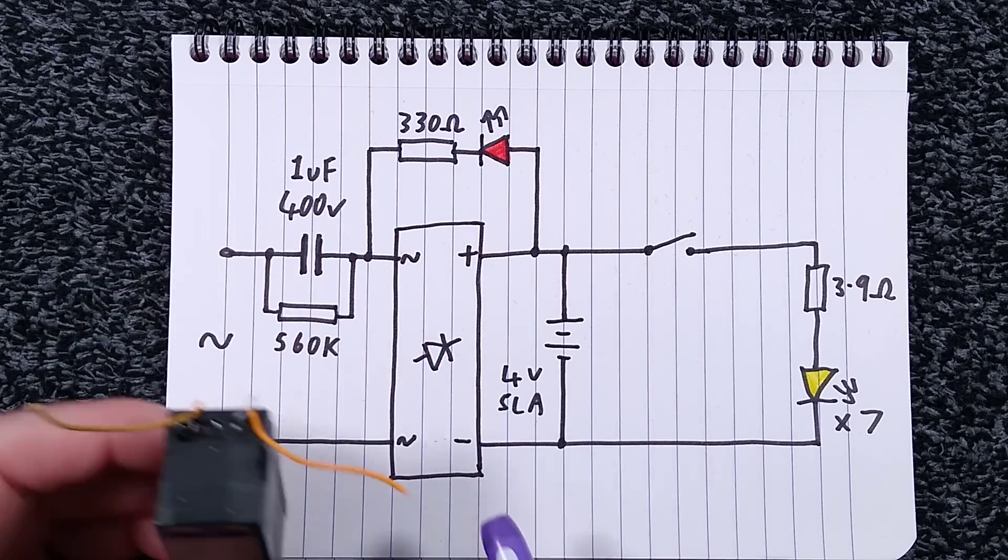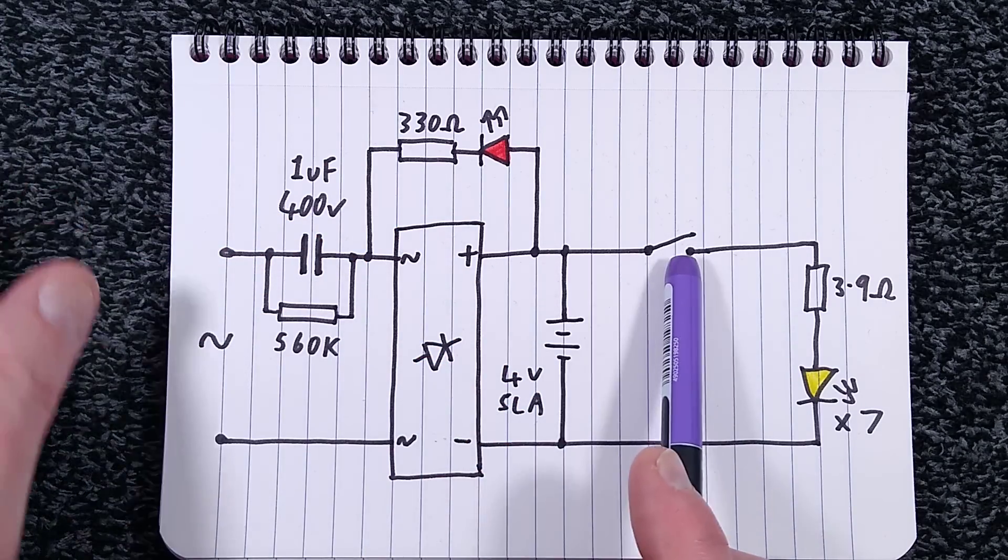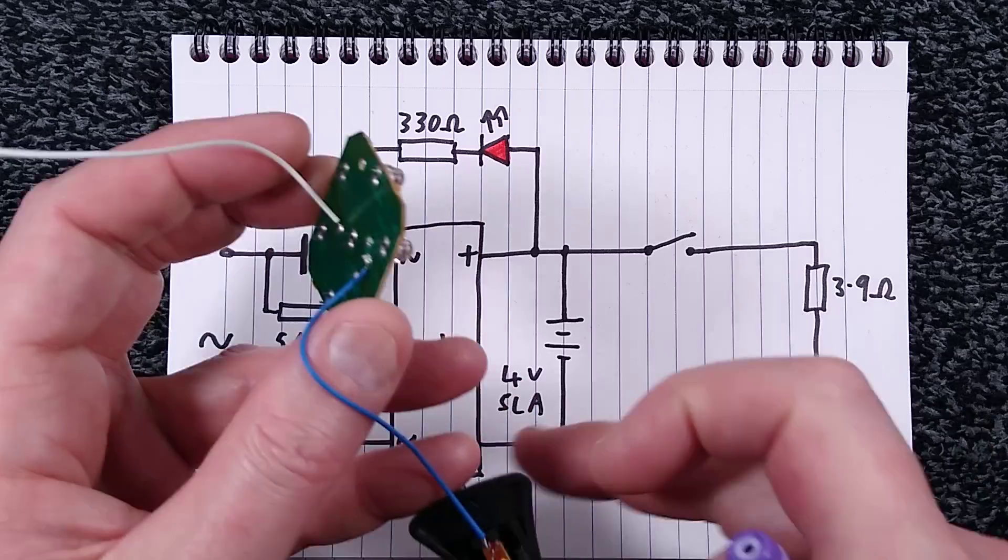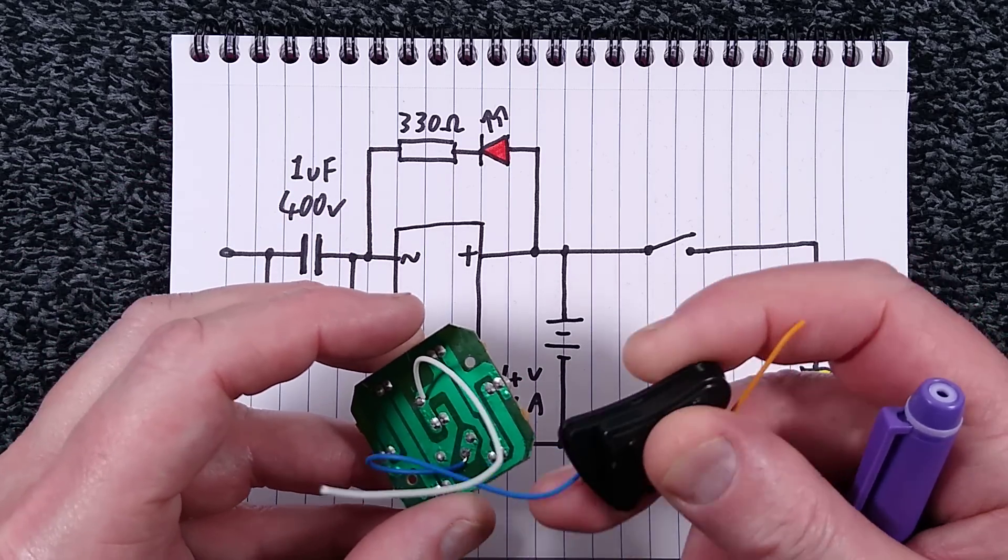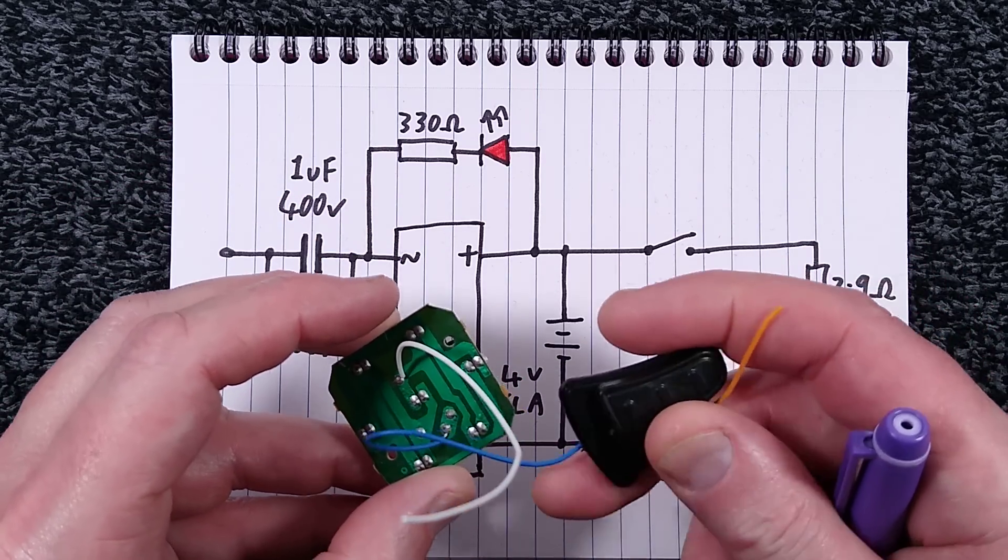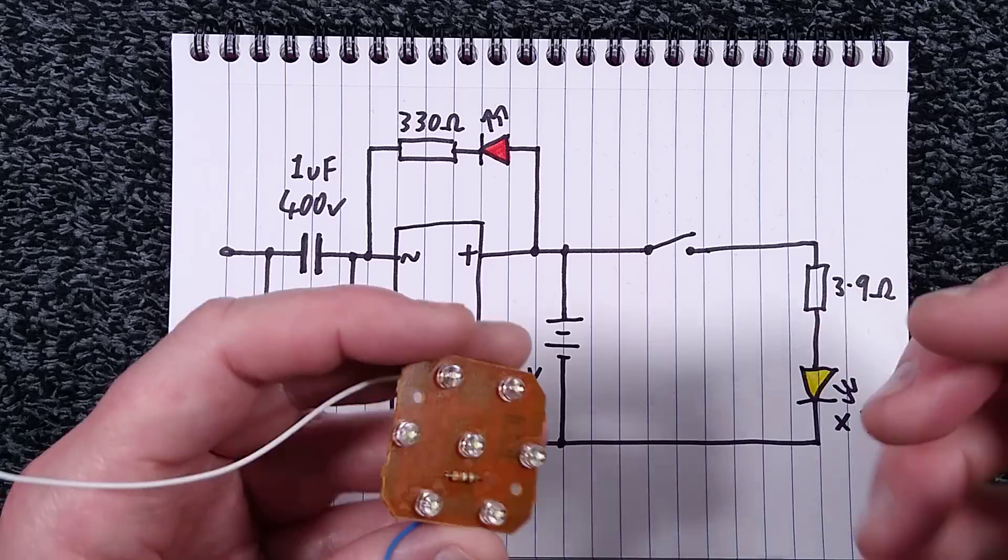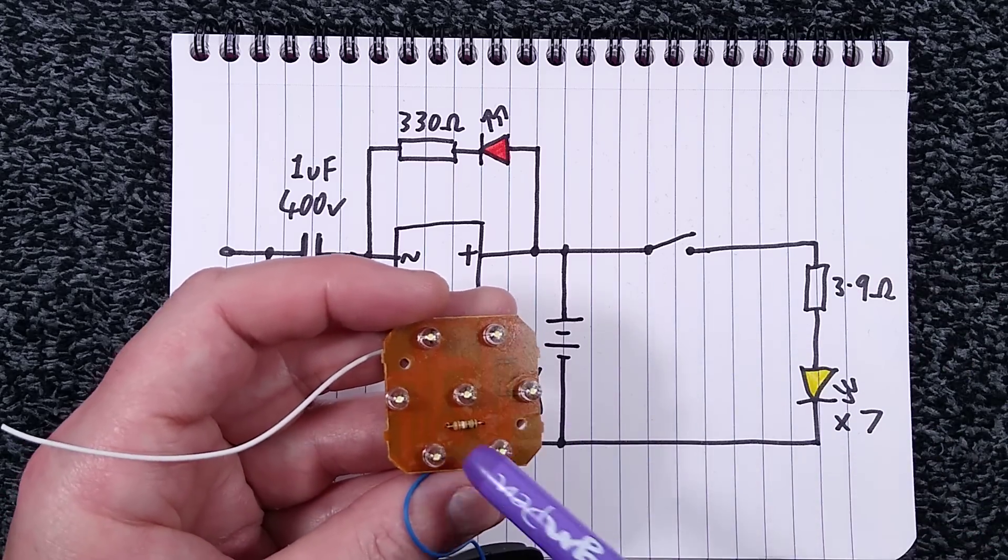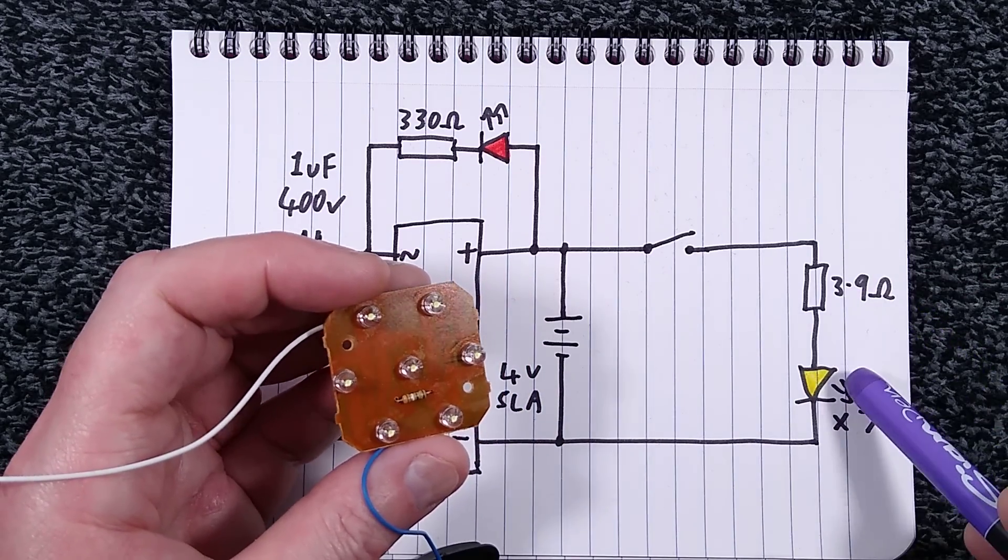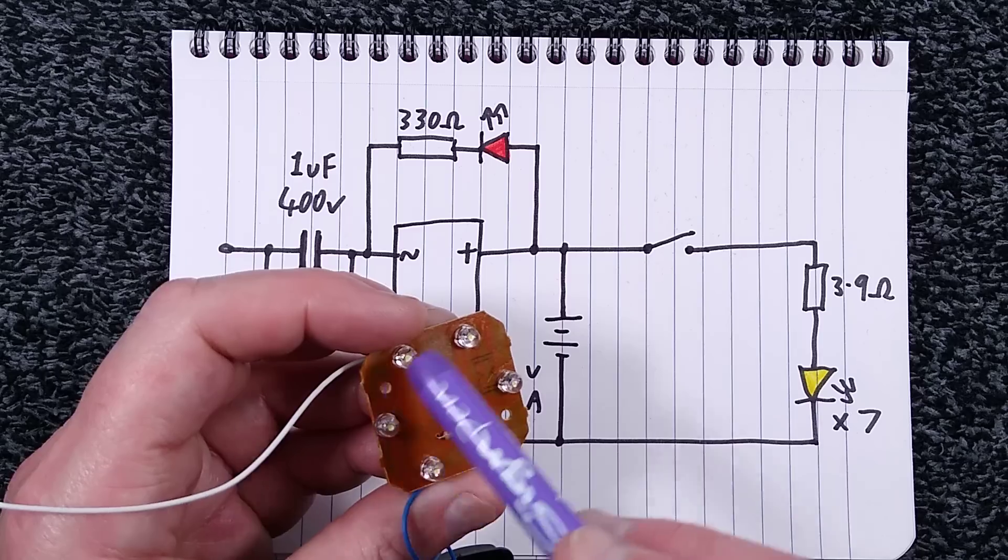It's a little two cell one and that then is output switched via this little switch here which is a multi-way switch but only one position has been used. I wonder if they've got other products to use it with. And that goes to a parallel circuit of seven LEDs with a 3.9 ohm resistor in series with them.